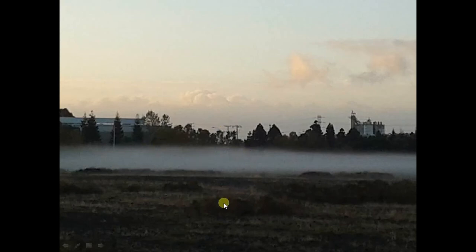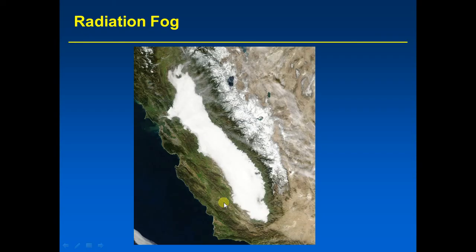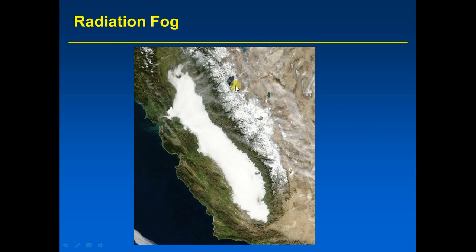A satellite image shows a blanket of radiation fog covering California's Central Valley, from near Chico extending through Sacramento, Stockton, Modesto, Fresno, and down to the Bakersfield area. Once you go into the foothills — the Mother Lode region — you don't have fog because the air was warmer there (thermal belt effect) and not at saturation. You can also see snow in the Sierras and Lake Tahoe.